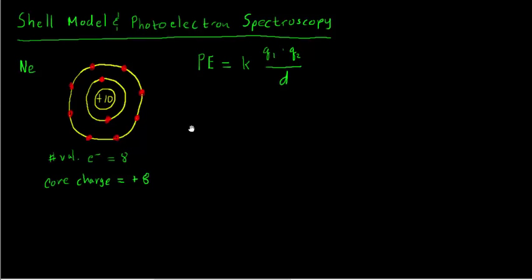The number of valence electrons and the core charge on the atom are always equal. So this is our model. We've got two different kinds of electrons: those in the first inner shell and those in the outer valence shell. Each of these electrons is going to feel a different kind of attraction to the nucleus. We can think about what that is by using Coulomb's law to calculate the potential energy PE. Coulomb's law says the potential energy equals some positive constant K, times Q1 — the charge on one particle — times Q2 — the charge on another particle — divided by D, the distance between them.